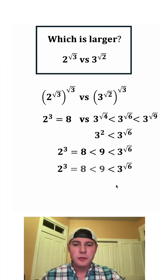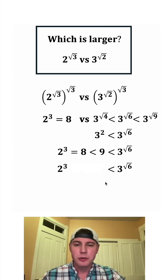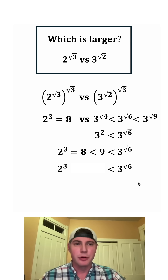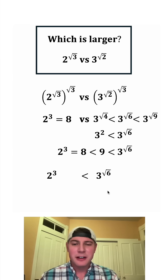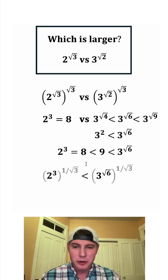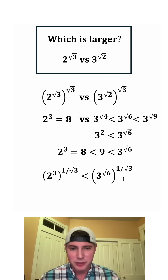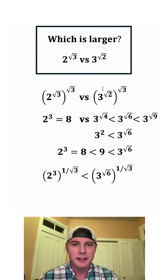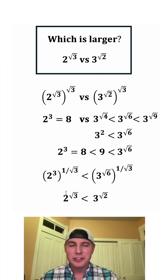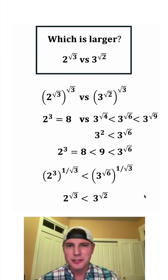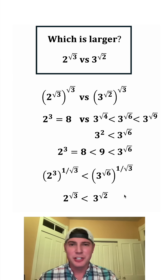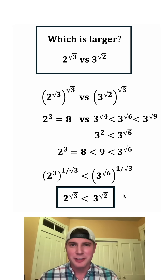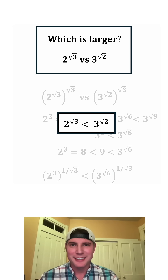Let's copy this down. This will only be true if two cubed is less than three to the root six. From here, if we raise both sides to the power of one divided by square root of three, that undoes what we did earlier. And now we know that two to the square root of three is less than three to the square root of two. That's the answer to our question — let's put a box around it. How exciting!